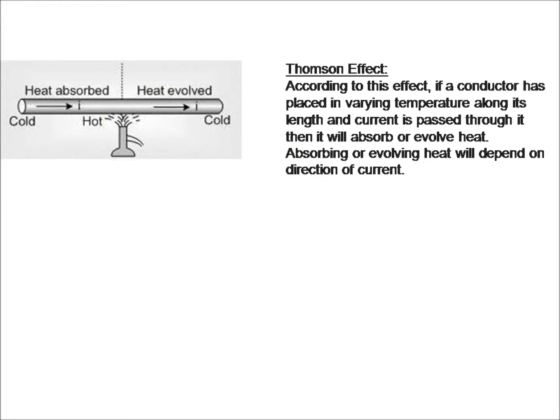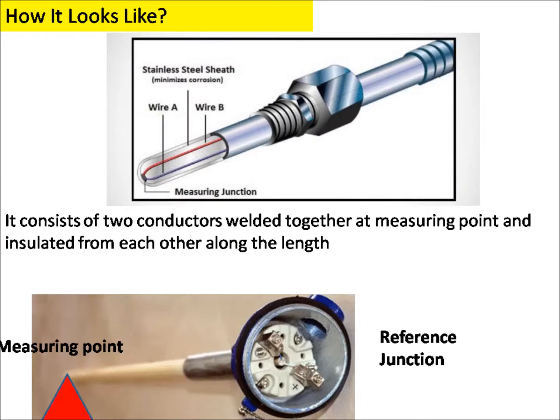According to the Thomson effect, if a conductor is placed in a varying temperature along its length and current is passed through it, it will absorb or evolve heat depending on the direction of the current. A thermocouple consists of two conductors welded together at the measuring point and insulated from each other along the length. You can see in the picture how a real thermocouple looks like.